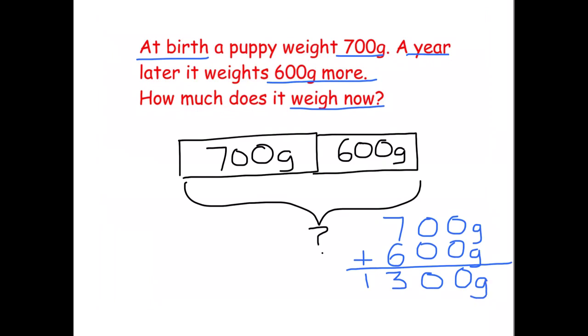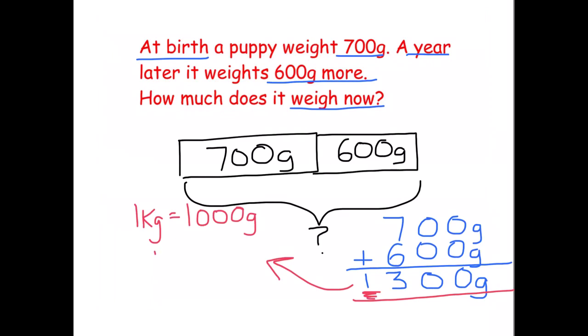The question may on occasion ask you to convert that into kilograms, so let's look at that. We know that one kilogram is 1000 grams. If we look at our answer, there is a 1 in the thousands telling us there's one kilogram and there are 300 grams — so the answer is 1 kilogram 300 grams.